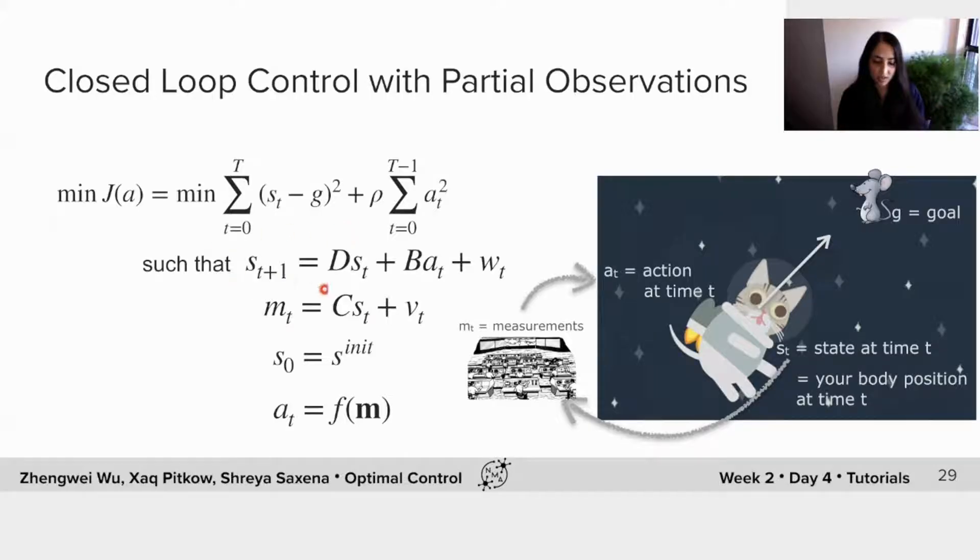However, the dynamics now include this m of t, which is a linear function of our state, but c basically signifies a partial observation of that state.